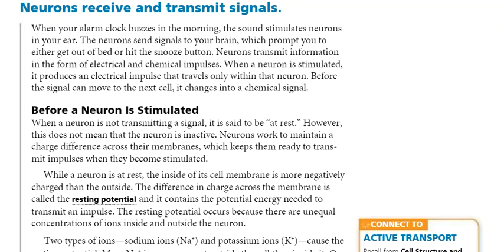The neurons transmit information in the form of electrical and chemical impulses. How does this happen? Today we will try to explain this process from A to Z.